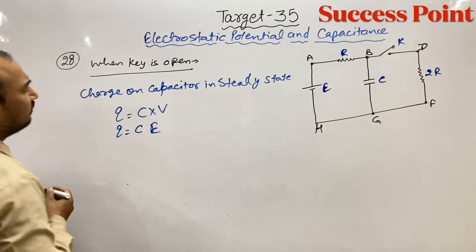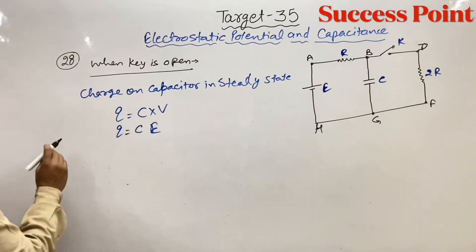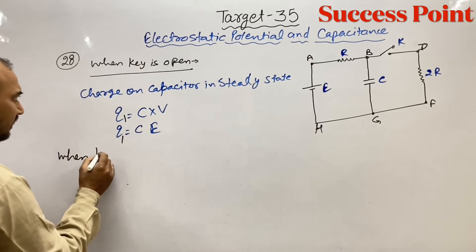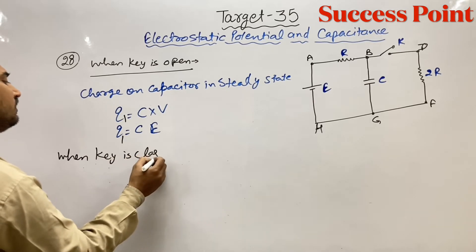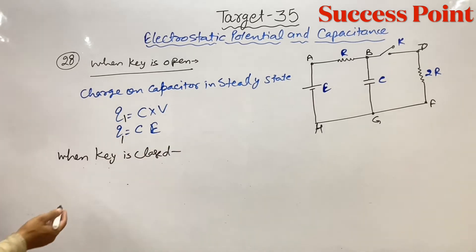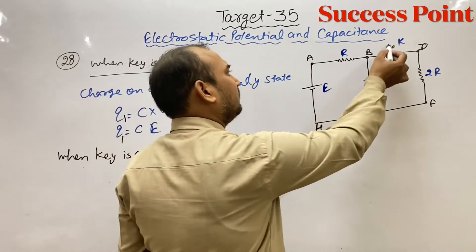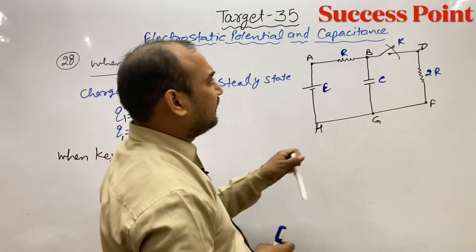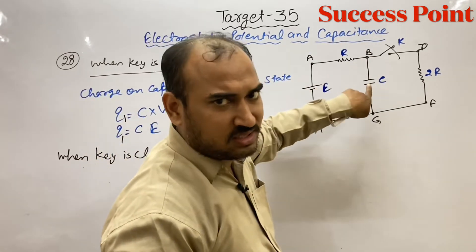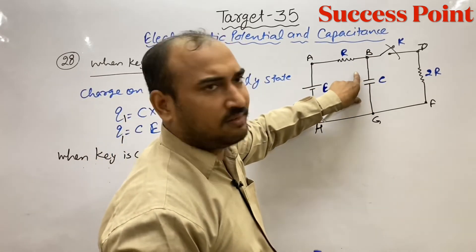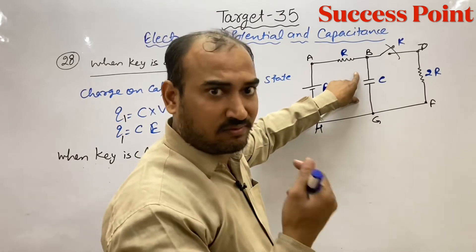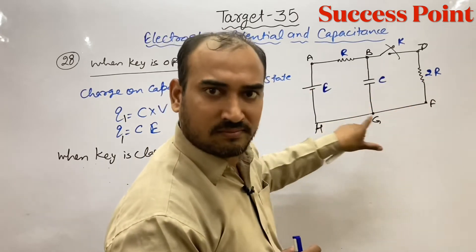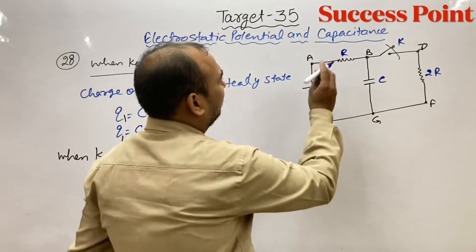अब हम बात करते हैं जब key is closed। दो cases हैं — पहले वाला charge q1 लिख लो। अब second case: when key is closed। जब आपने key को close कर दिया तो current flow होगी। Capacitor से current नहीं जाएगी क्योंकि steady state में यह current को block कर देता है — DC के लिए अपना resistance infinite कर देता है, open circuit की तरह काम करता है। लेकिन current इधर resistance से जाएगी।